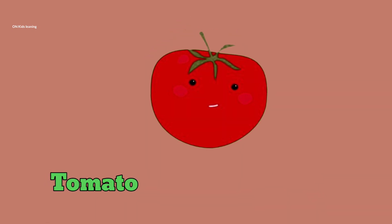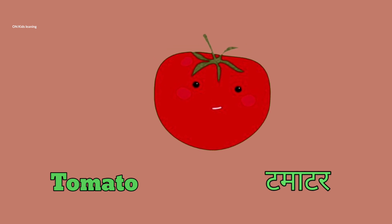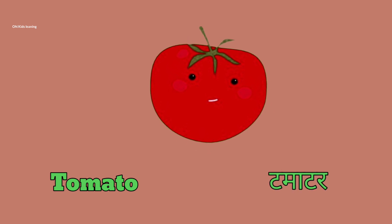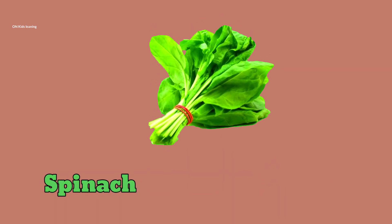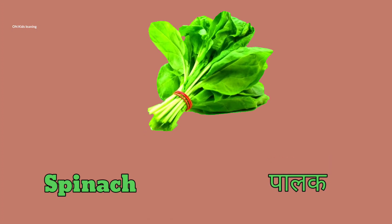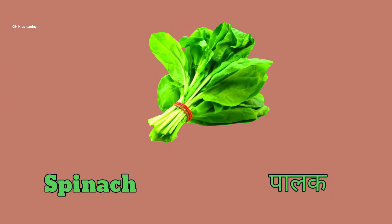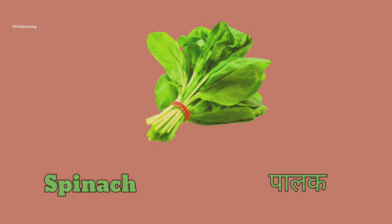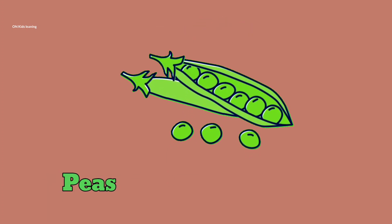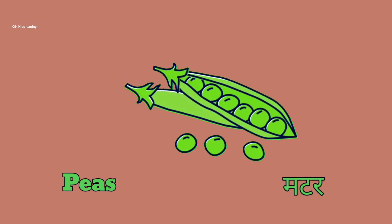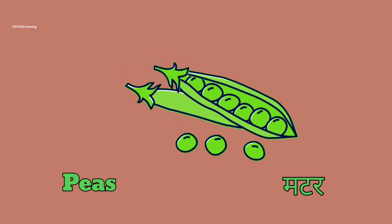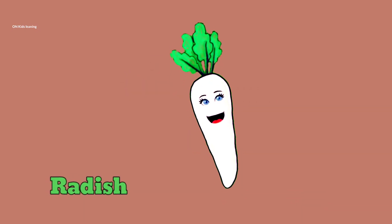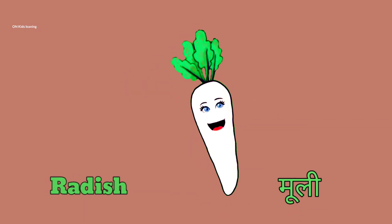Tomato — tomato means tomato. Spinach — spinach means palak. Peas — peas means mutar. Radish — radish means mooli.